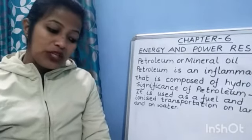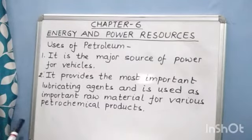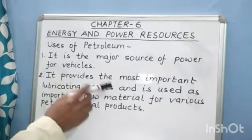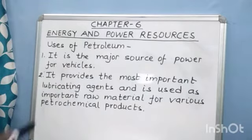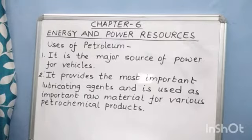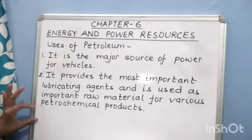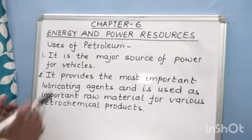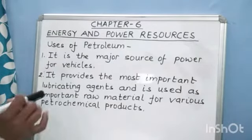The uses of petroleum: it is the major source of power for vehicles. It provides the most important lubricating agents and is used as an important raw material for various petrochemical products like synthetic rubber and plastics, synthetic fibers, dye stuffs, insecticides, drugs, and pharmaceuticals. So petroleum also provides raw material for these industries.